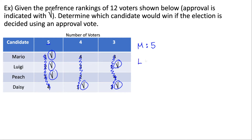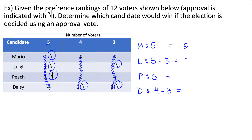Moving to Peach: five people approved of Peach, and that's it. For Daisy: four people approved and then three people approved of Daisy. Adding everything up we get five, eight, five, and seven. So Luigi has the most approval votes and is the winner of the approval election.